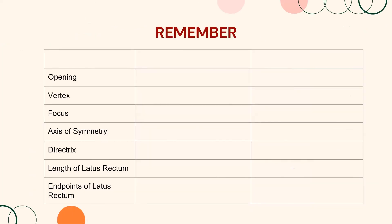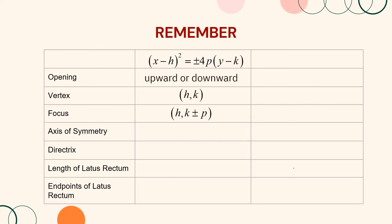If you prefer memorizing formulas over analyzing the graph, note the following. For a parabola in the form (x minus h) squared equals plus or minus 4p(y minus k), the opening is either upward or downward. The vertex is at (h, k). The focus is at (h, k plus p) or (h, k minus p). The axis of symmetry is x equals h. The directrix is y equals k minus p or y equals k plus p. The length of the latus rectum is 4p units. The endpoints of the latus rectum are (h plus or minus 2p, k plus p) or (h plus or minus 2p, k minus p).